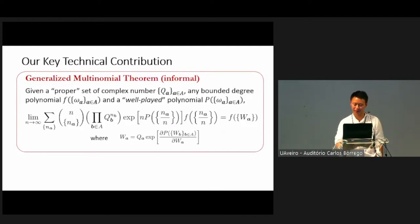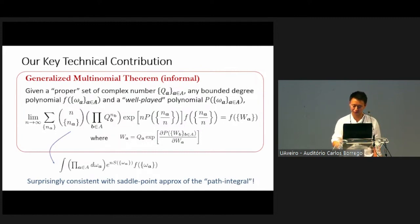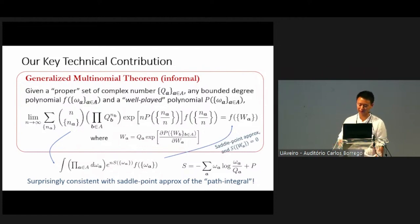We tackle this challenge by proving something called a generalized multinomial theorem, which is basically a method to evaluate this type of generalized multinomial sums. This is giving you an idea of the statement of the theorem. But it turns out that this theorem has a very nice interpretation in the sense that it's surprisingly consistent with the saddle point approximation of the path integral. What I mean is that if you write this sum as a path integral in the continuum limit, and then just take the saddle point approximation. By that I mean, if you look at this term in the exponential, you think of it as the action, and you look at the saddle point of this action, and then you just plug it into the function downstairs. That actually gives you the same result as this provable correct result that we get from this generalized multinomial theorem. There's a nice interpretation of how this calculation can be done.